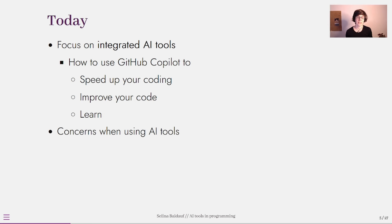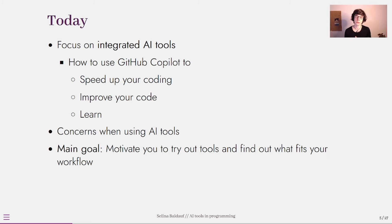I decided to stick with the tool I know best and find particularly useful, which is integrated AI tools — specifically GitHub Copilot. I want to show you how you can use it to speed up your coding process, improve your code, and learn new methods and techniques. I also want to briefly discuss some concerns and guidelines to consider when using AI tools especially in an academic setting. My goal is to motivate you to try out such tools yourself and find what best fits your personal workflow.